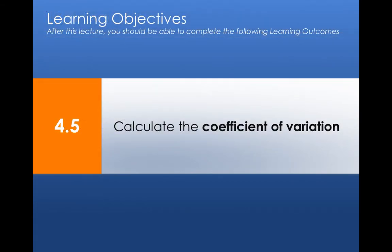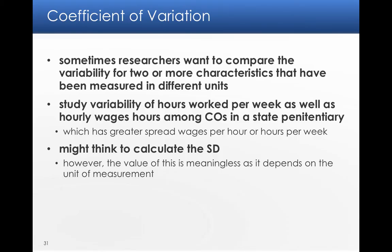Another measure of variability we might think about is called the coefficient of variation. Sometimes researchers want to compare variability for two or more characteristics that have been measured in different units. Imagine I want to compare hours worked per week as well as hourly wages amongst corrections officers in a state penitentiary. Which has more variability? Which spreads out more? Wages per hour or hours per week?